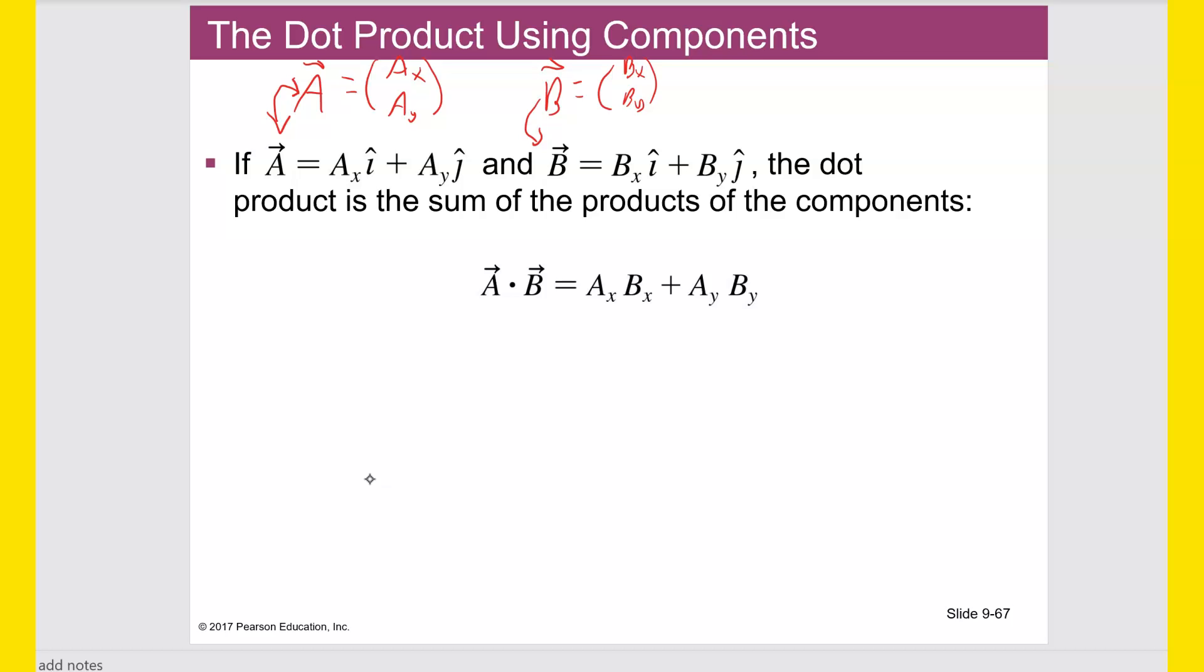And then, so when you dot these two things together, it's the two X components multiplied, and the two Y components multiplied, and then the results of those two things added together, the results of those two products being added together to get a final dot product, the final answer.